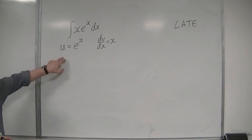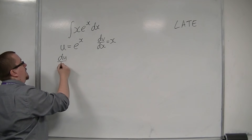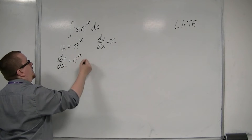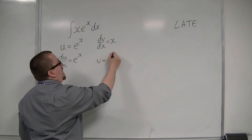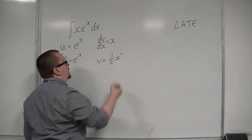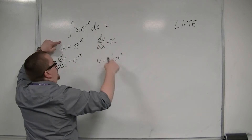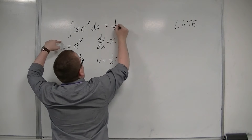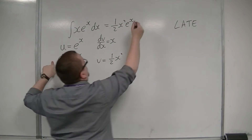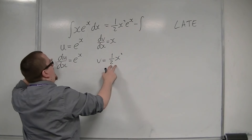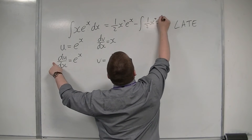So I would differentiate u, so du by dx is equal to e to the x. For dv by dx, I need to integrate to get v, so that's 1 half x squared. And so I would have u times v — so 1 half x squared e to the x — take away the integral of v times du by dx, so 1 half x squared e to the x dx.